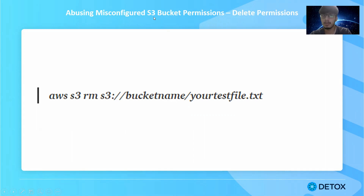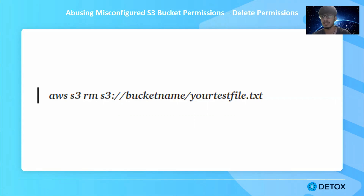To abuse delete permissions, use: 'aws s3 rm s3://[bucketname]/[filename]'. If you can successfully remove the file, verify using 'aws s3 ls' that the file no longer exists. If it's gone, it means you can delete any file. If sensitive files or application-critical CSS/JS files can be deleted, you can cause significant harm to the application — again, a high severity issue. However, on a disclaimer: do not test delete permissions on live websites without the organization's consent, as you could face serious trouble.